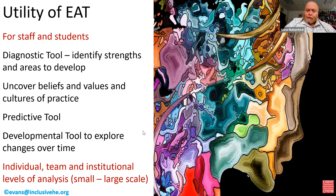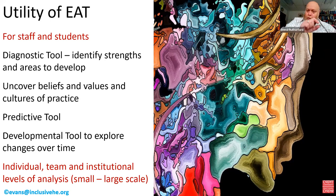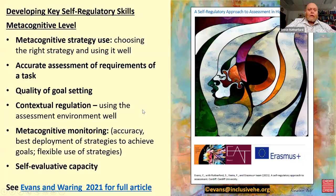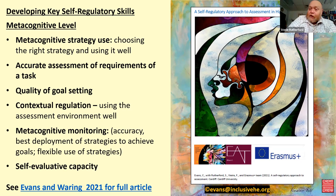You can use the EAT framework to make tiny little changes, or use it as a framework to make massive institutional changes. We're going to develop more resources and a MOOC-like online course focused at individual, team, and institutional levels of applying the framework. The key thing around it is the development of self-regulation in students and the self-regulatory skills they need in learning.